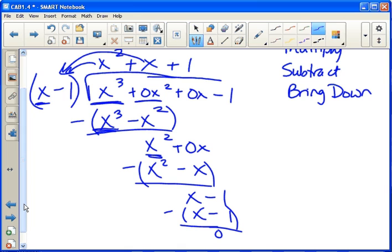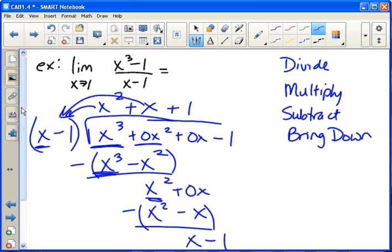So now we know what this fraction equals. If we divide x cubed minus one over x minus one, we get x squared plus x plus one. And that allows us to plug in our one for x. We get one plus one plus one, which is three.